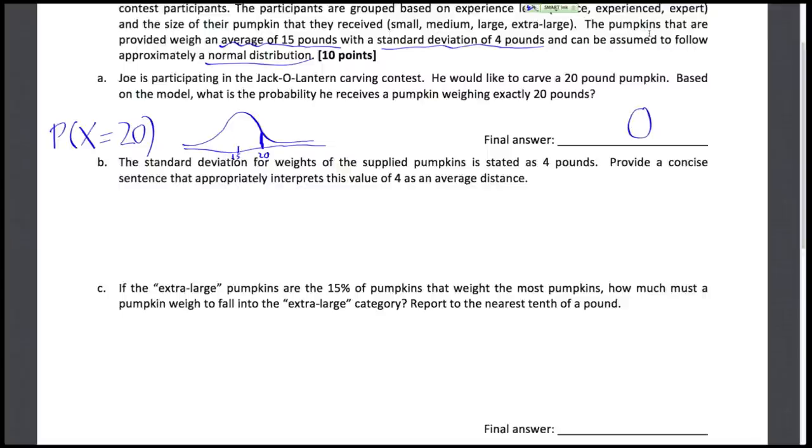In practicality, maybe you'd want to find the probability he gets about a 20 pound pumpkin, maybe from 19 and a half to 20 and a half if they're rounding pumpkin weights. But getting a precisely 20 pound pumpkin, no chance in theory.